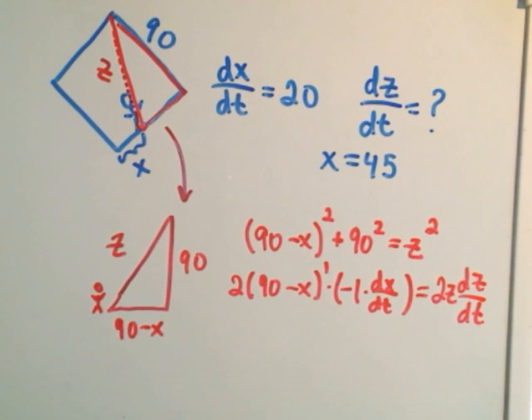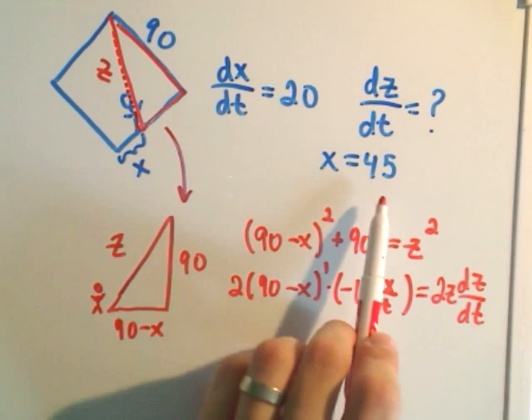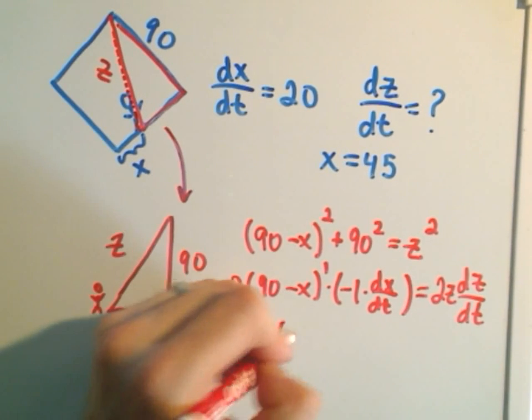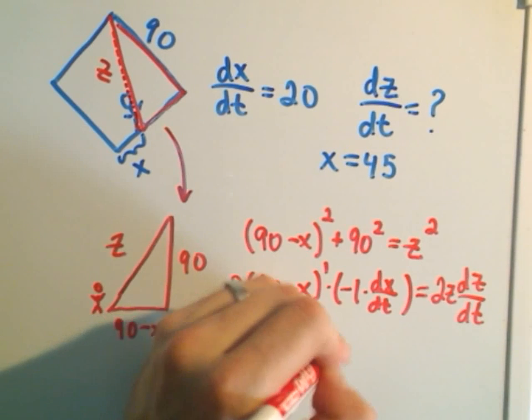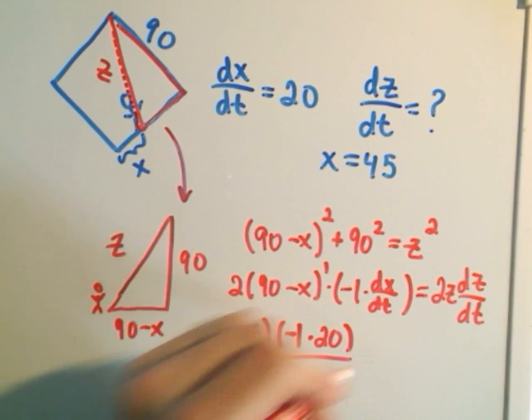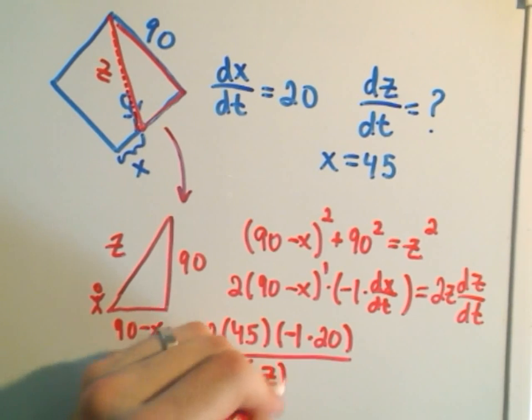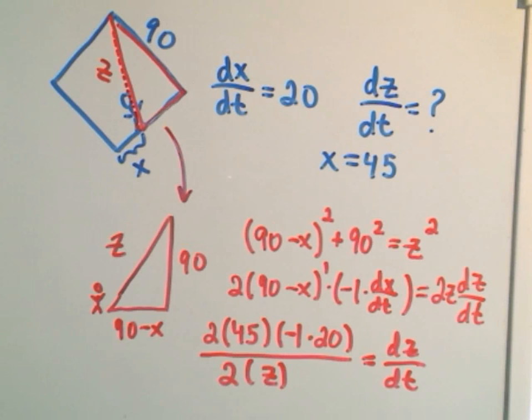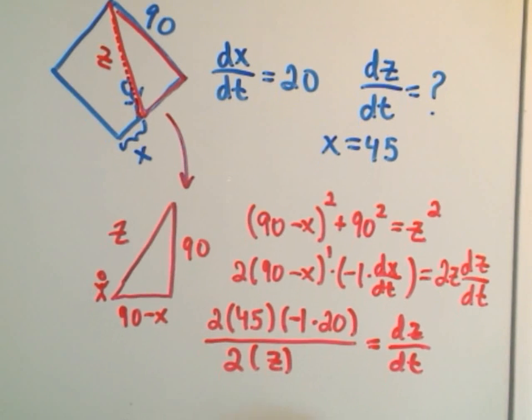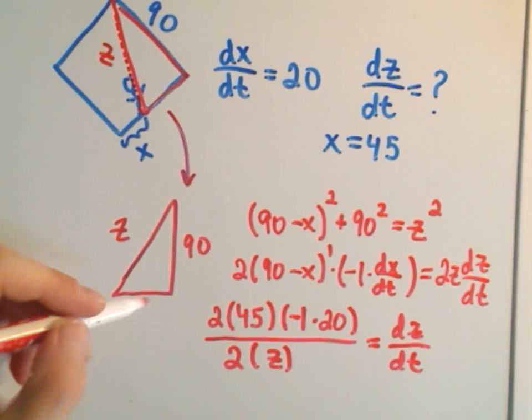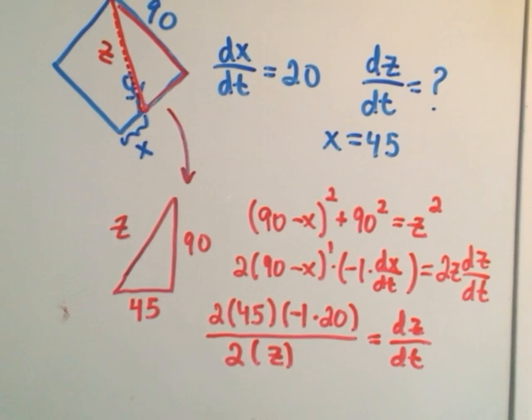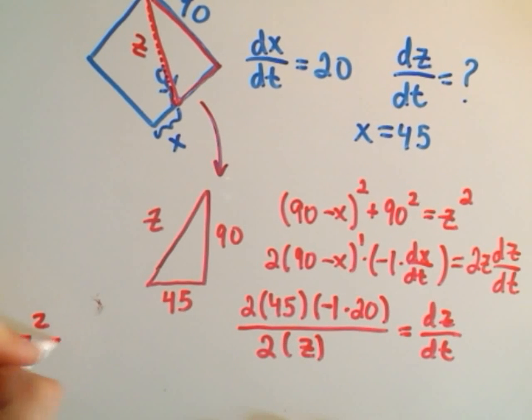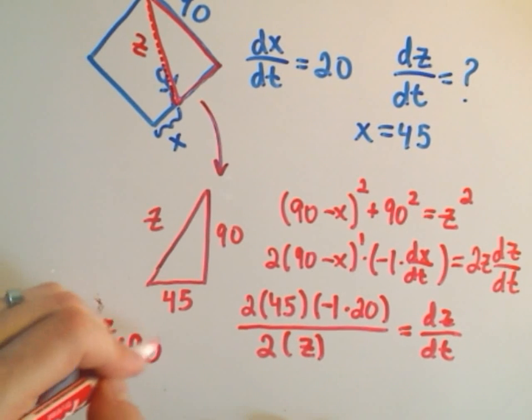So now I just have to go back and start plugging in all my information. So we know that X is 45, so I'm going to get 2 times 45. I've got negative 1 times dx dt, dx dt is 20. I can divide both sides by 2Z, that'll give me dz dt. But notice we don't have the value for Z. Well, at this particular instant in time, if he's gone 45 feet, that means that this is 45 feet. By the Pythagorean theorem, we'll get that Z squared equals 45 squared plus 90 squared.